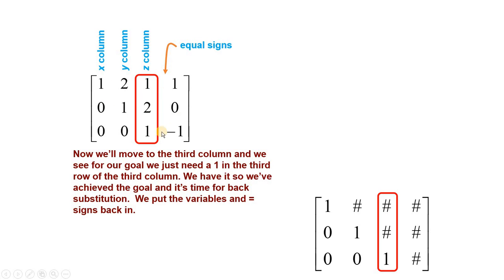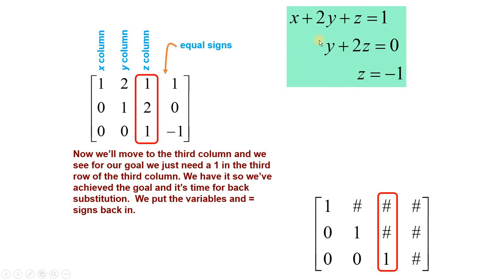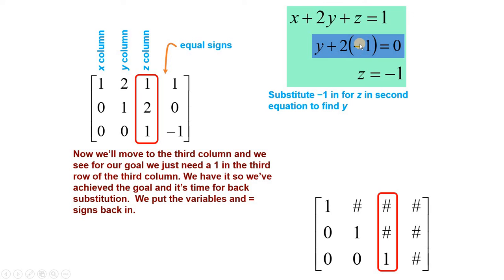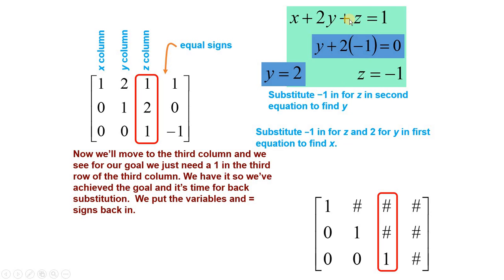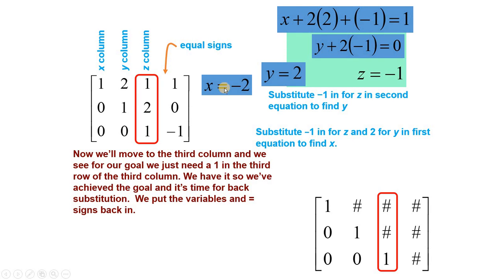اب ان یہاں سے ہم system of equation واپس لکھتے ہیں۔ اب ہم کیا کرتے ہیں — اسی z کو یہاں پہ put کرنا ہے تاکہ ہمیں y کی value ملے۔ یہاں پہ z کی value آگئی ہے — اس طرح ہمیں y کی value ملی۔ اب y اور z کی value یہاں پہ put کریں گے — تو یہاں سے ہمیں x کی value ملی۔